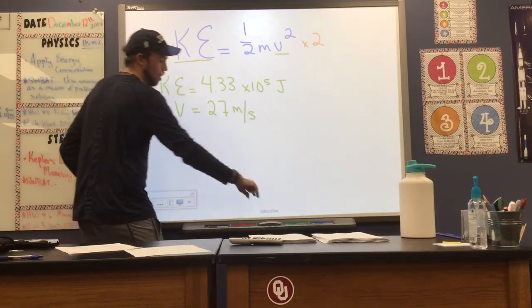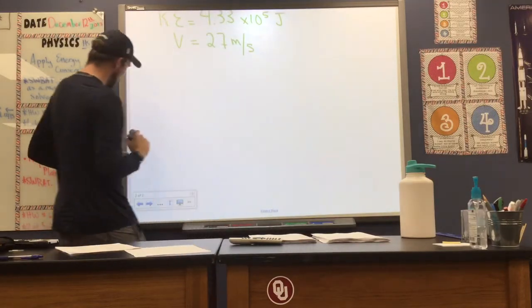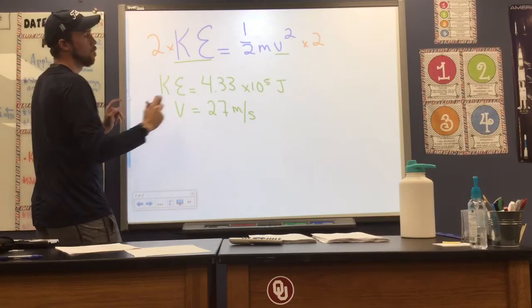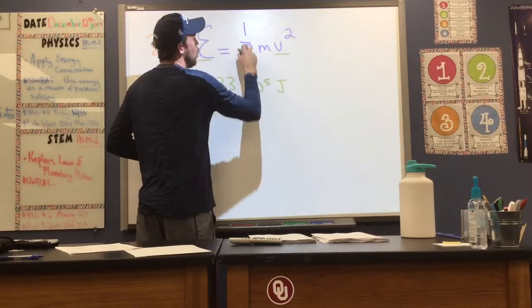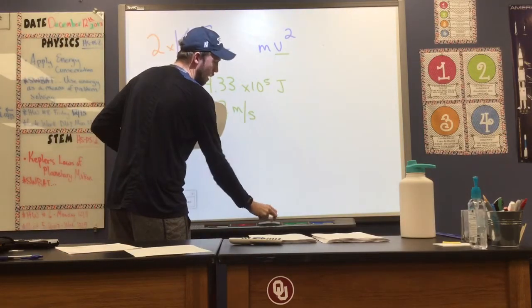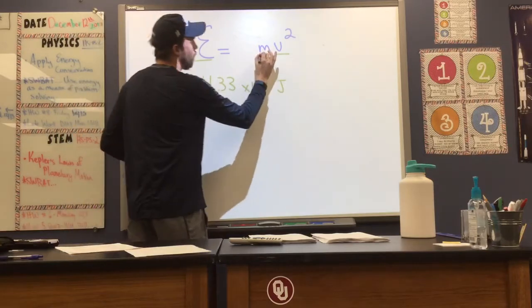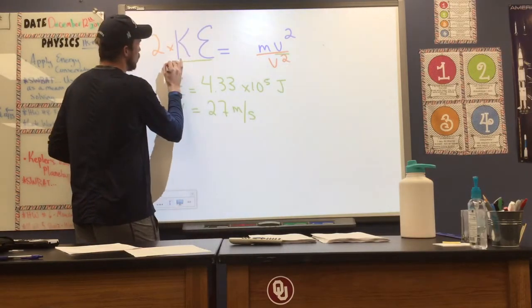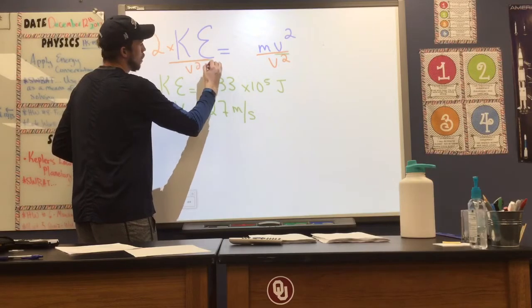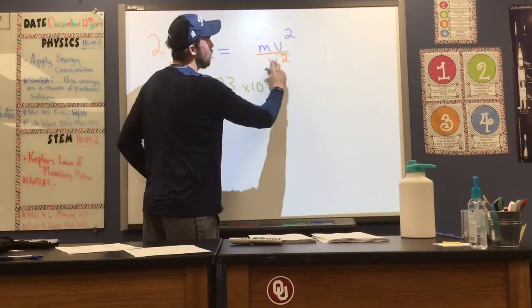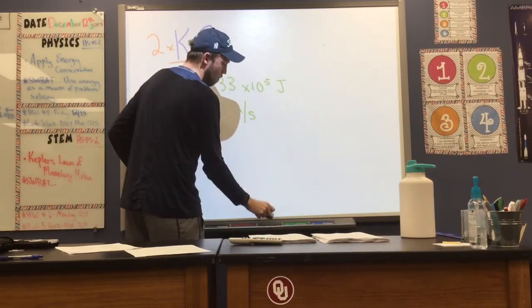So 2 times my kinetic energy, 2 times 1 half, that would get rid of my 1 half value on the right side of my equation. And then I could divide by v squared on both sides of my equation, and dividing by v squared would help me get the mass by itself.